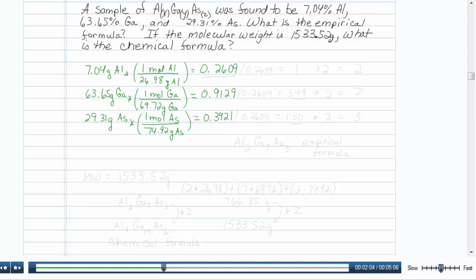Well, these things are supposed to be whole numbers when we talk about empirical formulas. So, the easiest thing to do is to take the smallest number, the 0.2609, and divide all three numbers by that value.